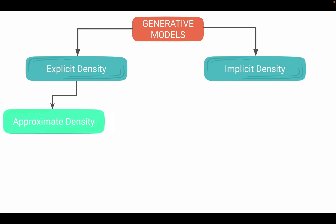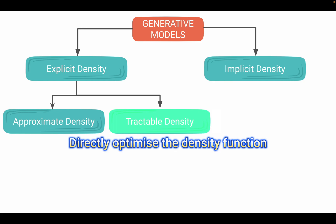These approximate density models only optimize an approximation of density function. The next group is tractable density models. Tractable density models directly optimize the density function.